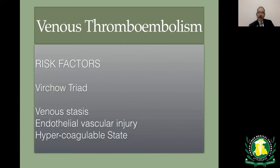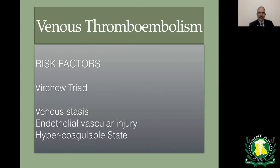In order for a clot to be formed in the deep venous system, there have to be three things: venous stasis, damage to the vascular endothelium that exposes the highly thrombogenic subendothelial connective tissue, and a hypercoagulable state.